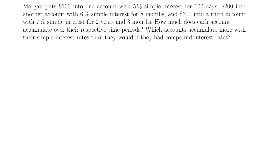Welcome back. We're going to start with this example where Morgan puts $100 into one account with a 5% simple interest rate for 100 days, $200 into another account with a 6% simple interest rate for 8 months, and $300 into a third account with 7% simple interest for 2 years and 3 months. How much does each account accumulate over their respective time periods?